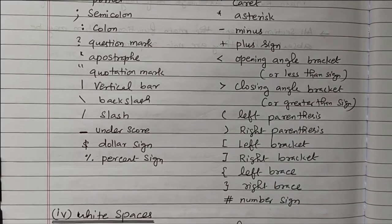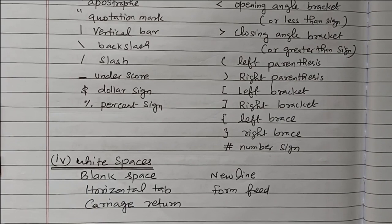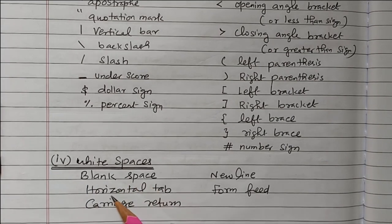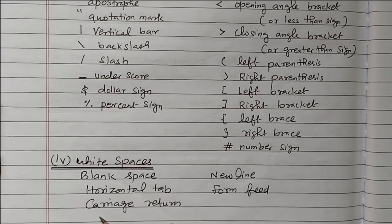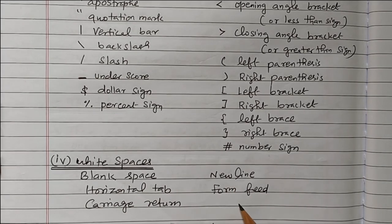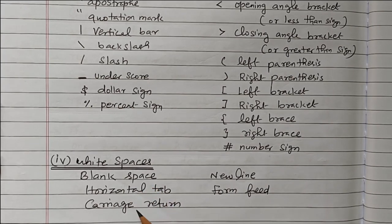The fourth one is the white space. White space means the blank space — blank space, horizontal tab, carriage return, new line, and form feed. These are all coming under the white space category in the character set of the C program.